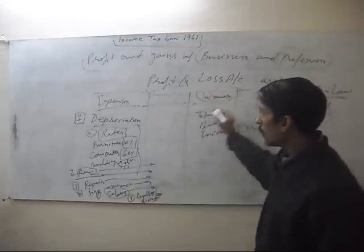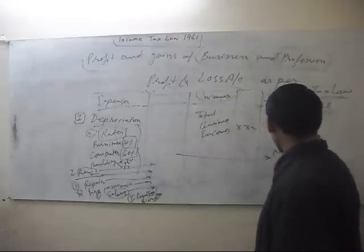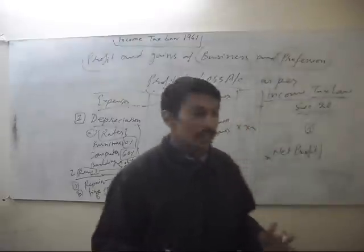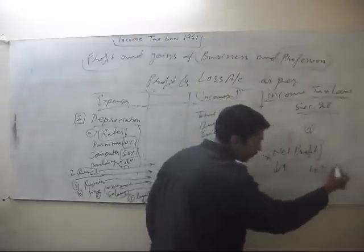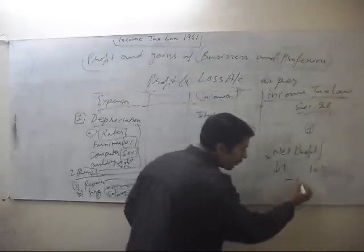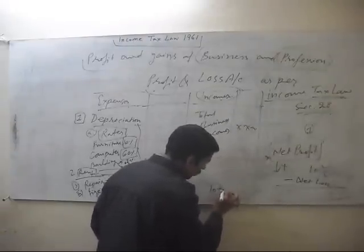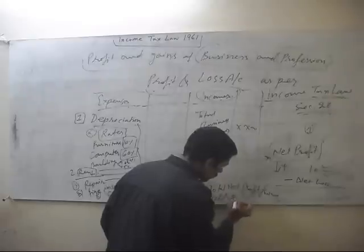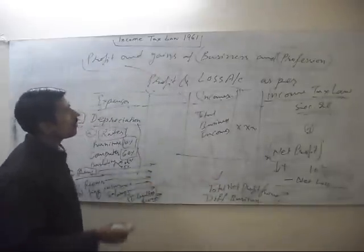Now, the difference — income minus expenses — will be our net profit. This is for one business. Suppose we have ten businesses. Then we will add the net profit of the first business, the net profit of the second business, and so on. If in one business we have a loss, we will deduct that net loss. The total net profit from different businesses will be our overall Profit and Gains from Business or Profession.